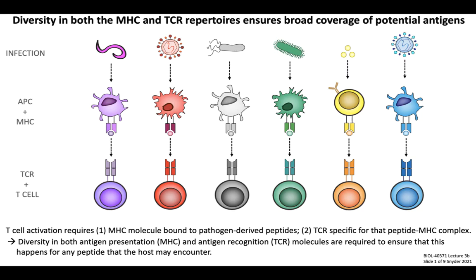In this sense, the antigen presentation machinery should hypothetically be able to load and present any possible sequence of peptide fragments, essentially allowing the innate immune system to be poised and ready to initiate adaptive immune responses against literally any species or category of pathogen. For the first part of today's lecture, we'll learn more about the ways in which diverse repertoires of MHC molecules are generated and how this ensures immunological coverage of microbial antigen.